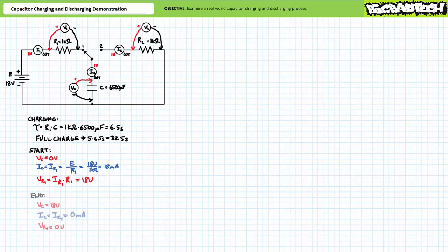After five time constants, or 32.5 seconds, the fully charged capacitor can be modeled as an open circuit. At t equals 32.5 seconds, current through both R1 and the capacitor will have ceased and 18 volts will be dropped across the fully charged capacitor. At the end of the charge process, both I1 and IC will equal zero amps, V1 will be zero volts, and VC will be 18 volts. These are the end points for the charge process.